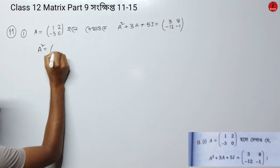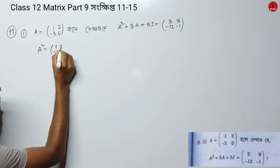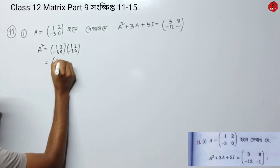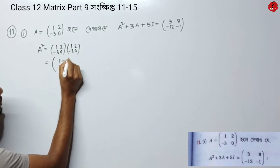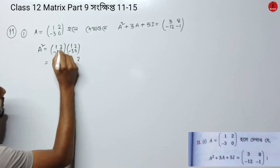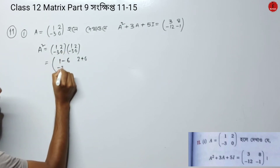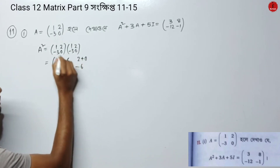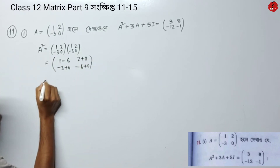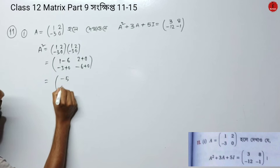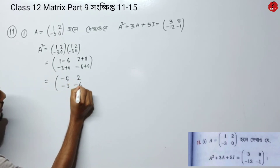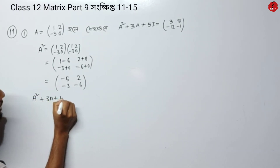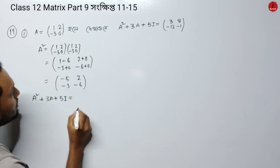For the first problem, A² equals A into A. The matrix is [1, 2; -3, 0] into [1, 2; -3, 0]. Computing: we get entries 1·1 + 2·(-3), 1·2 + 2·0, -3·1 + 0·(-3), -3·2 + 0·0. Then we compute A² plus 3A plus 5I.